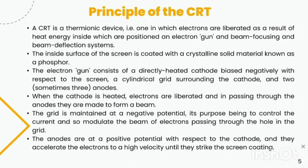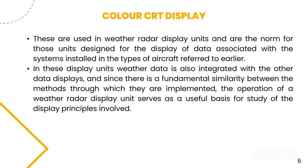The grid is maintained at negative potential, its purpose being to control the current and so modulate the beam of electrons passing through the hole in the grid. The anodes are at a positive potential with respect to the cathode and they accelerate the electrons to a high velocity until they strike the screen coating.